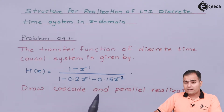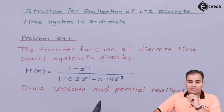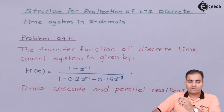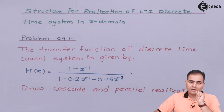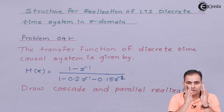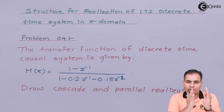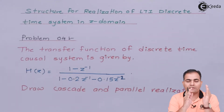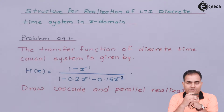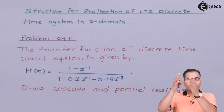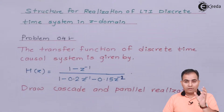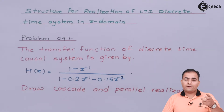In cascade realization, we have to factorize the numerator and denominator. Once we get the factorized format, place one factor of numerator and denominator on one side and multiply it with another factor on the second side. This gives us two different transfer functions, and we draw a separate DF2 form for each.